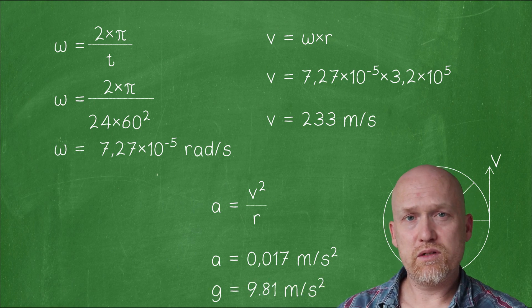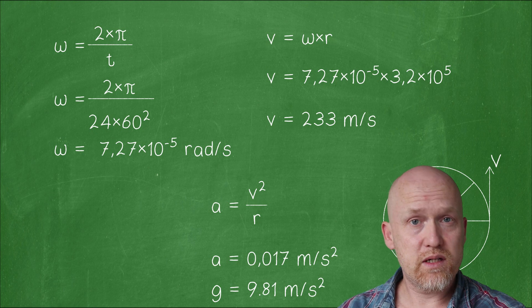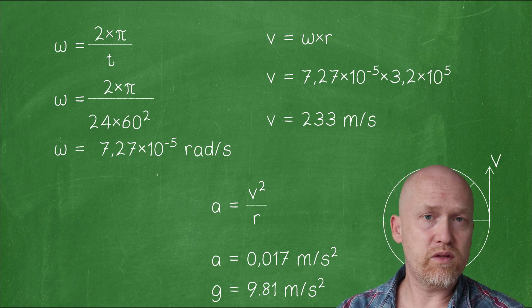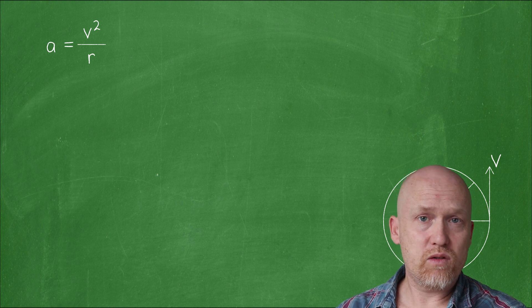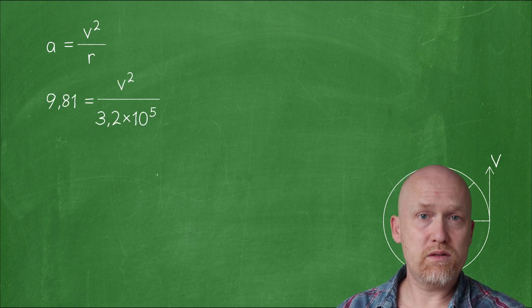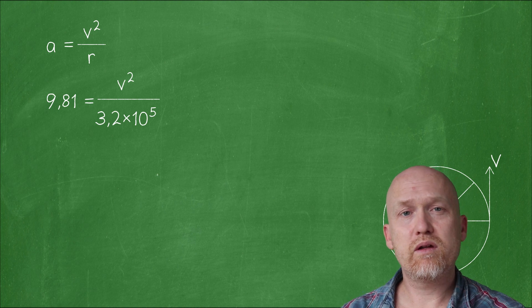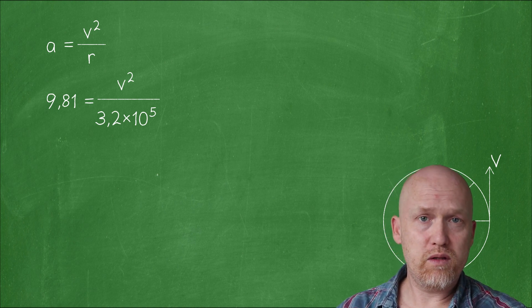Let's reverse engineer this and try to find out what it takes for anything to be thrown off the earth. The acceleration must exceed g so we can put forth that 9.81 is equal to velocity squared over 3.2 million meters.